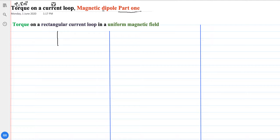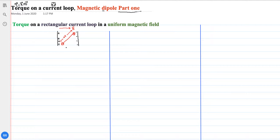The electric field is applied like this: one end is the positive plate and the other end is the negative plate. Lines of force originate from the positive plate and terminate at the negative plate — this is the direction of the electric field. In between, we place a dipole whose negative end and positive end are separated by a distance 2L.